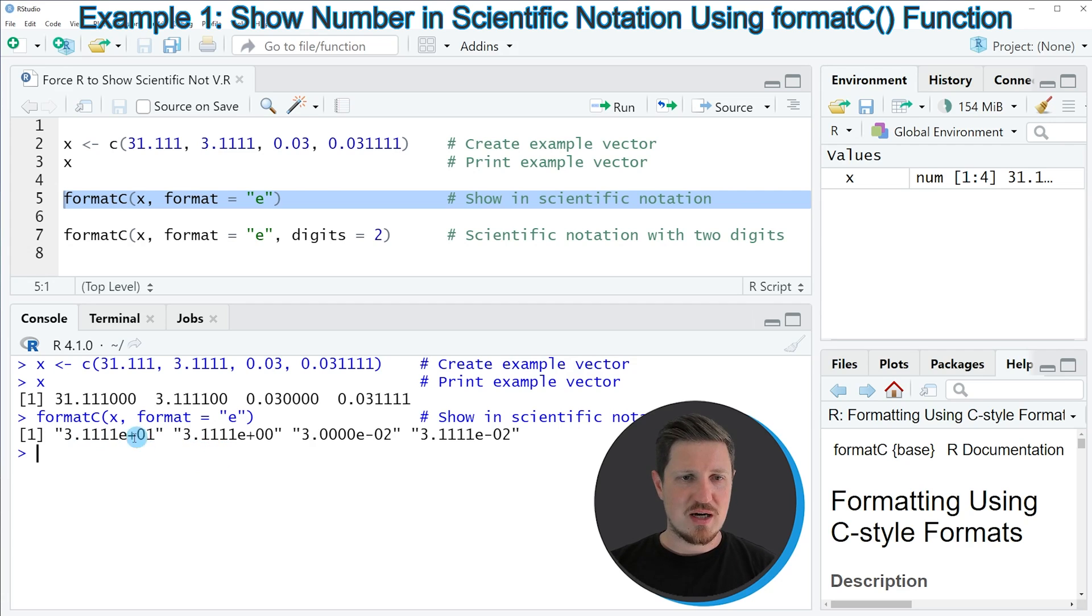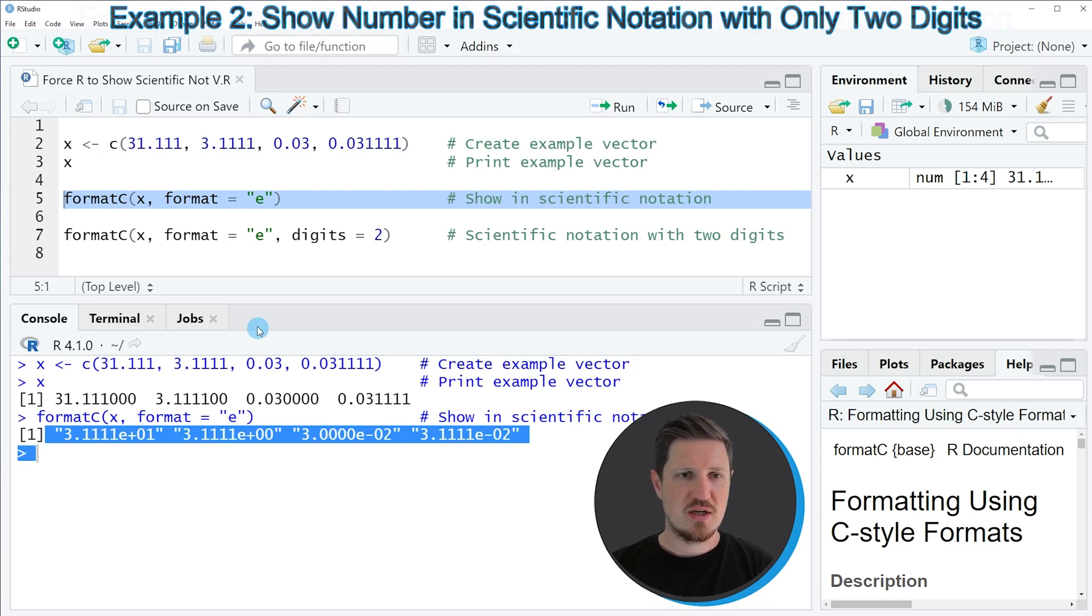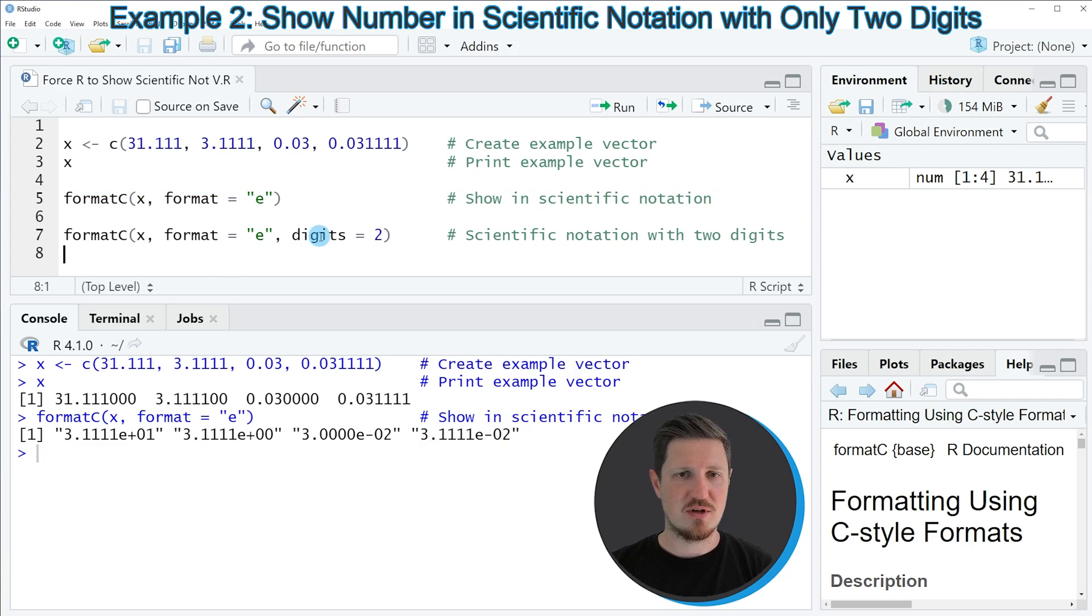So in this first example, I have explained how to apply the formatC function to create a vector with numbers in scientific notation. However, you can also see that the scientific notation digits do vary between the numbers. So if we want to harmonize those digits, we can use the digits argument within the formatC function, as you can see in line 7 of the code.